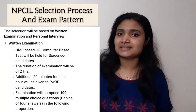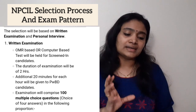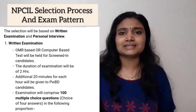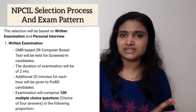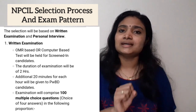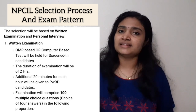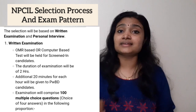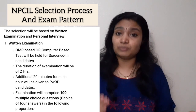In this video we'll be seeing the detailed selection process and exam pattern. The selection process consists of two parts: the first one is the written examination and the second one is a personal interview. The written examination is a computer-based examination, and there will be a written exam for both stipendiary trainee diploma and stipendiary trainee science graduate. For both categories the selection process is the same.